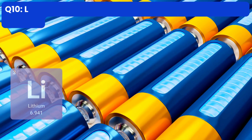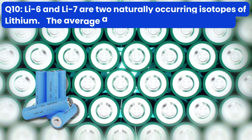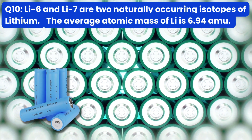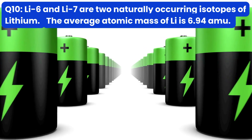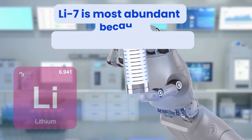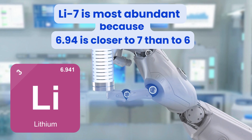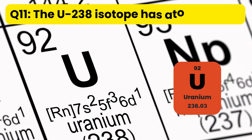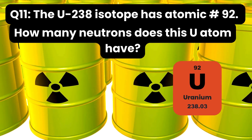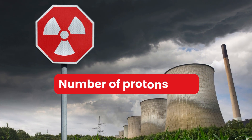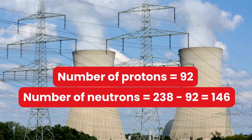Question 10: Lithium-6 and lithium-7 are two naturally occurring isotopes of lithium. The average atomic mass of lithium is 6.94 AMU. Which of the two lithium isotopes is most abundant and why? Lithium-7 is the most abundant because the average atomic mass of 6.94 AMU is closer to 7 than to 6. Question 11: The U-238 isotope has atomic number 92. How many neutrons does this uranium atom have? Number of protons is 92, so number of neutrons is 238 minus 92, which equals 146.